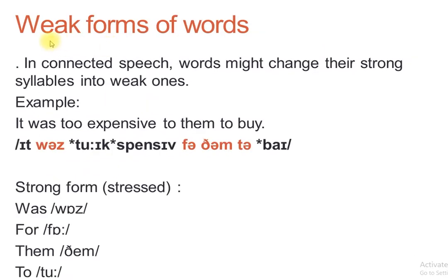Now let's move to the new part: Part 2 — Weak Forms of Words. Words can have strong forms or weak forms. In connected speech, words might change their strong syllables into weak ones. A syllable is strong when it contains a strong vowel. So when does the vowel change into a weak one? In connected speech.